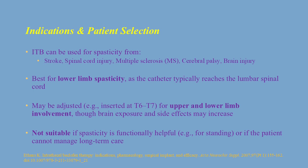Intrathecal baclofen therapy is best used for lower limb spasticity, as the catheter typically reaches the lumbar spinal cord. However, this may also help with upper and lower limb spasticity by adjusting the catheter to be inserted up to around the level of T6 or T7 or even higher, though brain exposure and side effects may increase in this case.